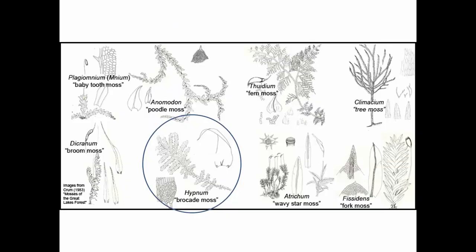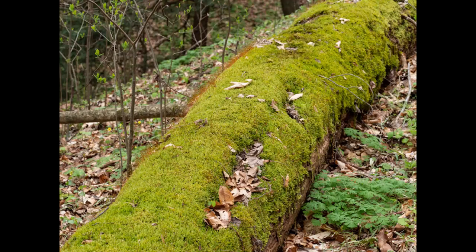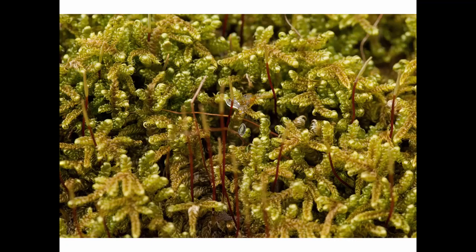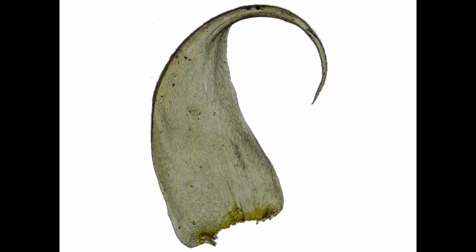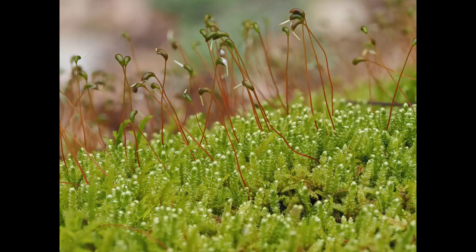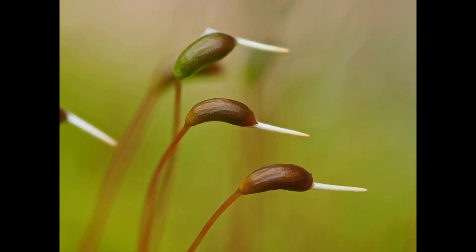Finally, there's a moss called Hypnum. Hypnum is a smooth-leaved pleurocarp with leaves that are distinctly sickle-shaped. It's very common on logs and also on rocks. The leaves look like they've been combed with a part in the middle and neatly braided to the sides. Through the microscope, the leaf doesn't have a costa — or at least a very short, virtually absent costa — and the alar cells are somewhat enlarged. The leaves are tapered and bent — sickle-shaped. Here's Hypnum in spring with sporophytes that kind of look like birds.